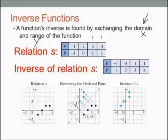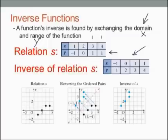An inverse is found by taking the x and y and basically flip-flopping them. So as you can see down here in this second table, I've taken the y values and made them the x values, and I've taken the x values and made them the y values.